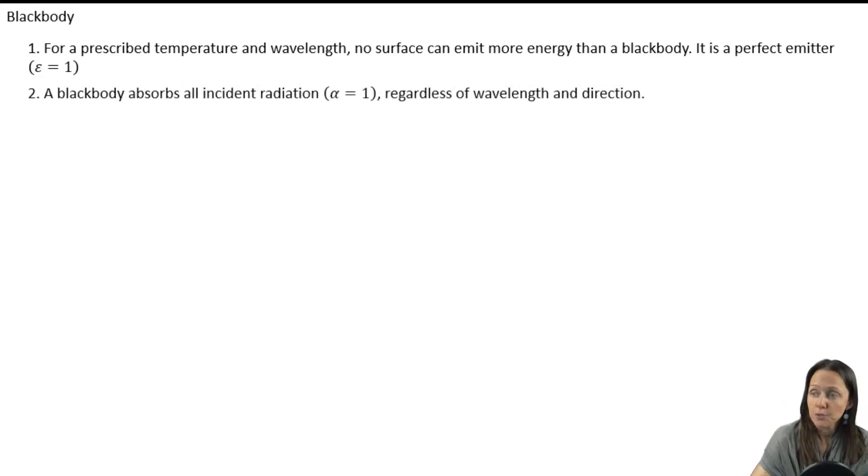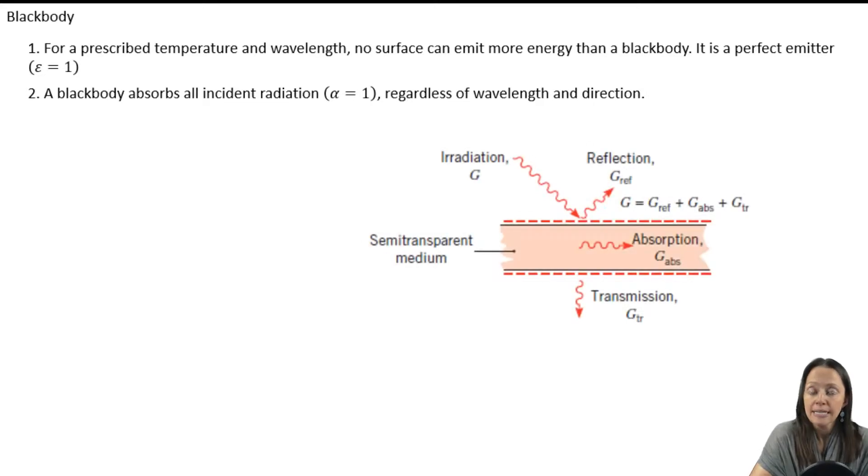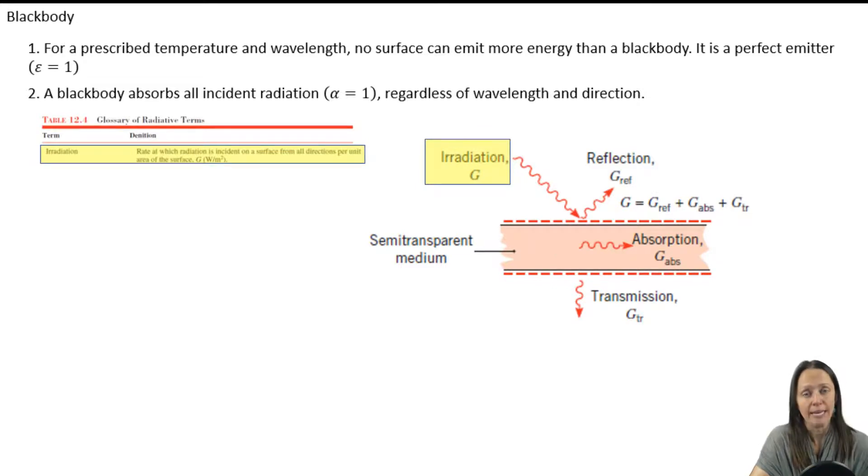A black body absorbs all incident radiation, regardless of wavelength and direction. So let's talk about that for a moment. We know that objects emit radiation, but they are also interacting with other things that emit radiation. And when that radiation hits the surface of a body, several things can happen. This is figure 12.5 in your book. So let's look at all these components.